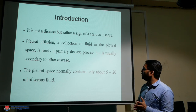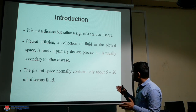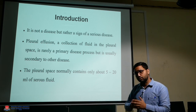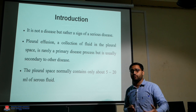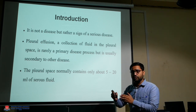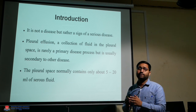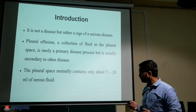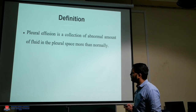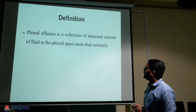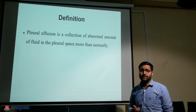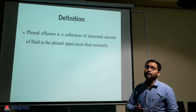When the amount of fluid is more than 5 to 20 ml, this is called pleural effusion. Normally, the amount of pleural fluid contained in the pleural space is 5 to 20 ml. The definition of pleural effusion is a collection of an abnormal amount of fluid in the pleural space, more than the normal amount.